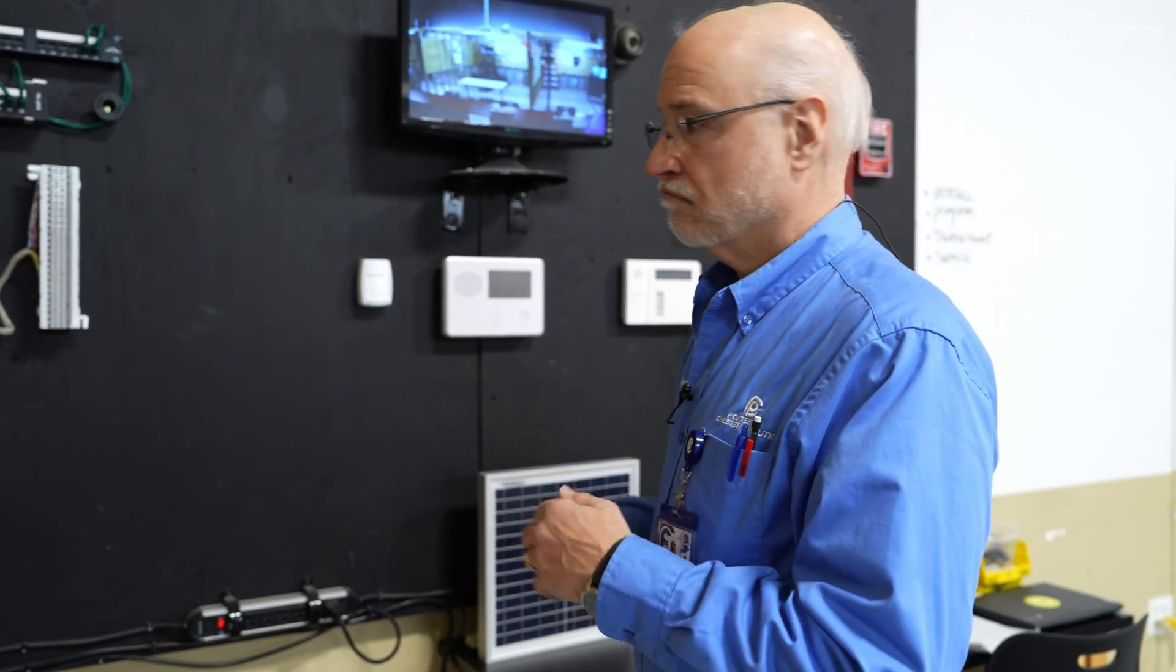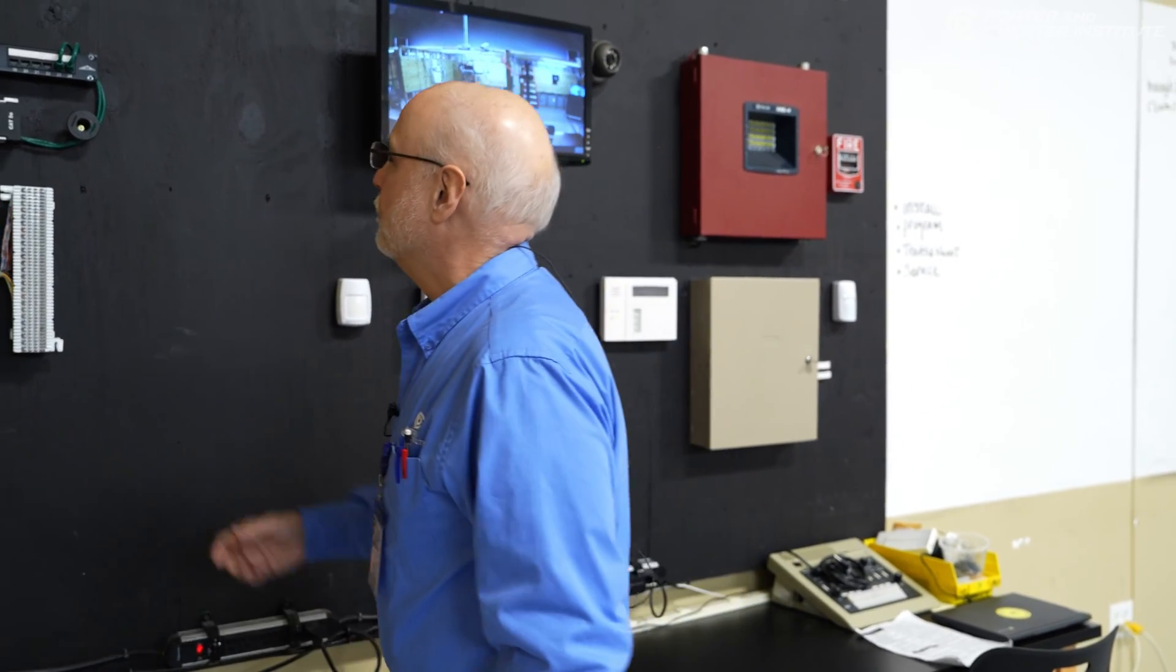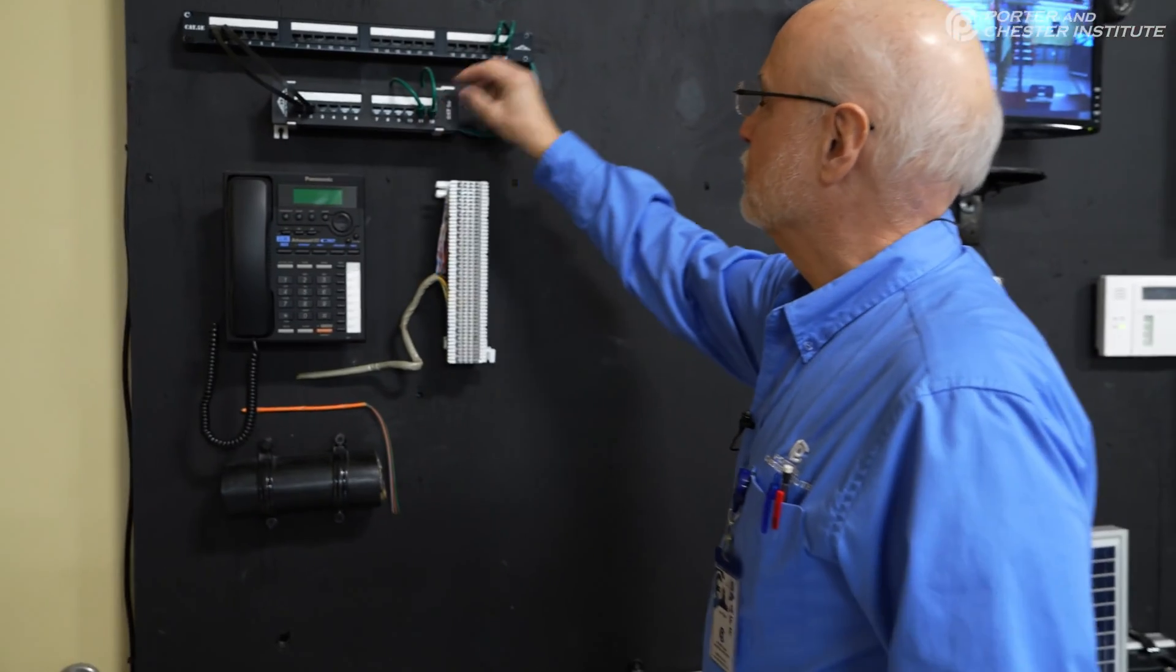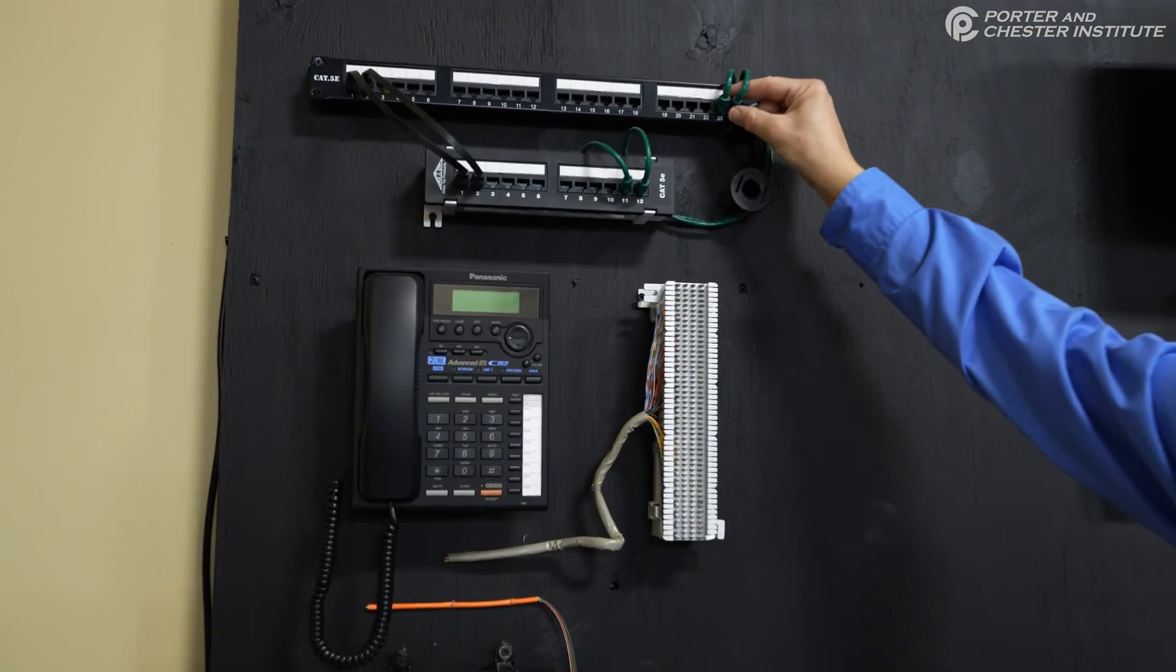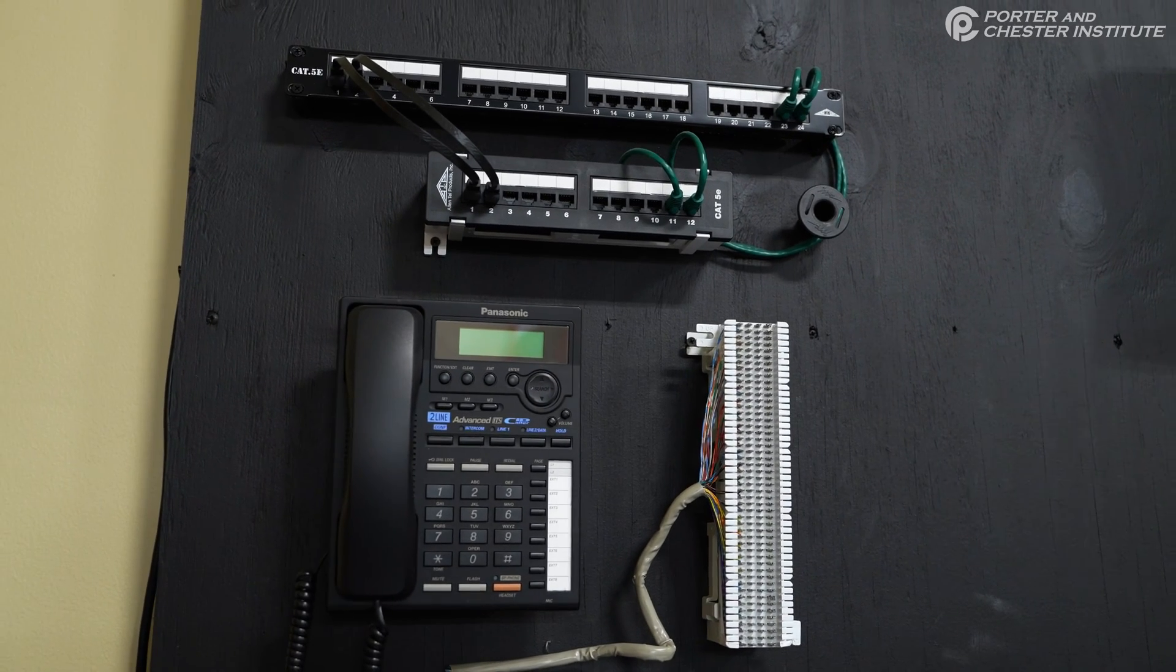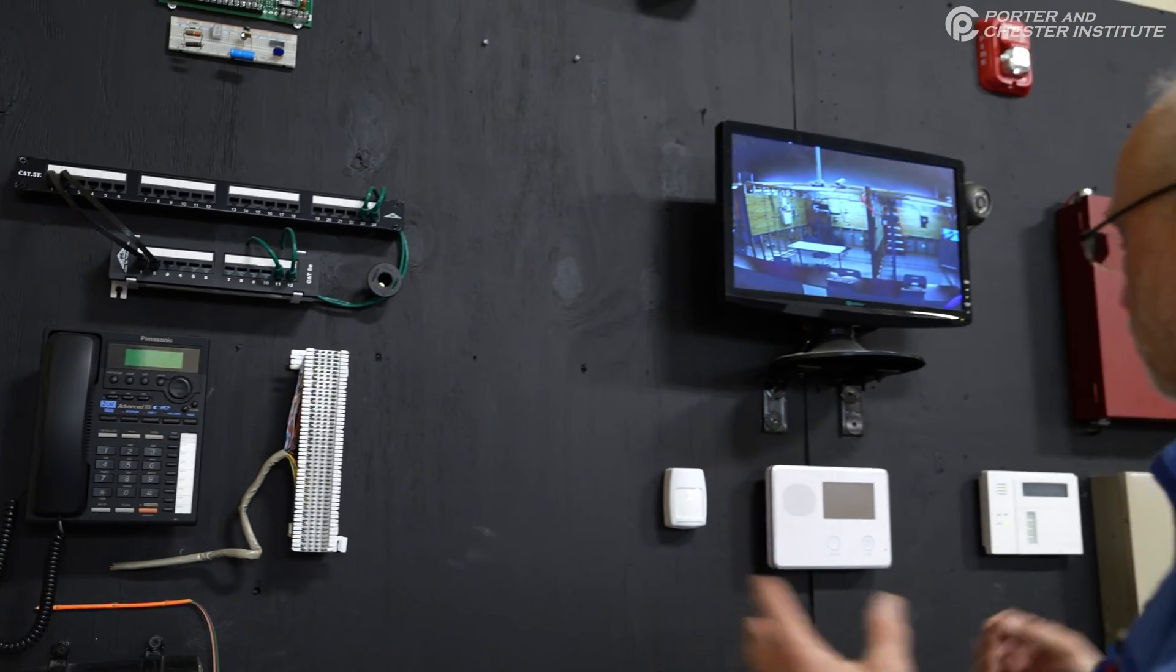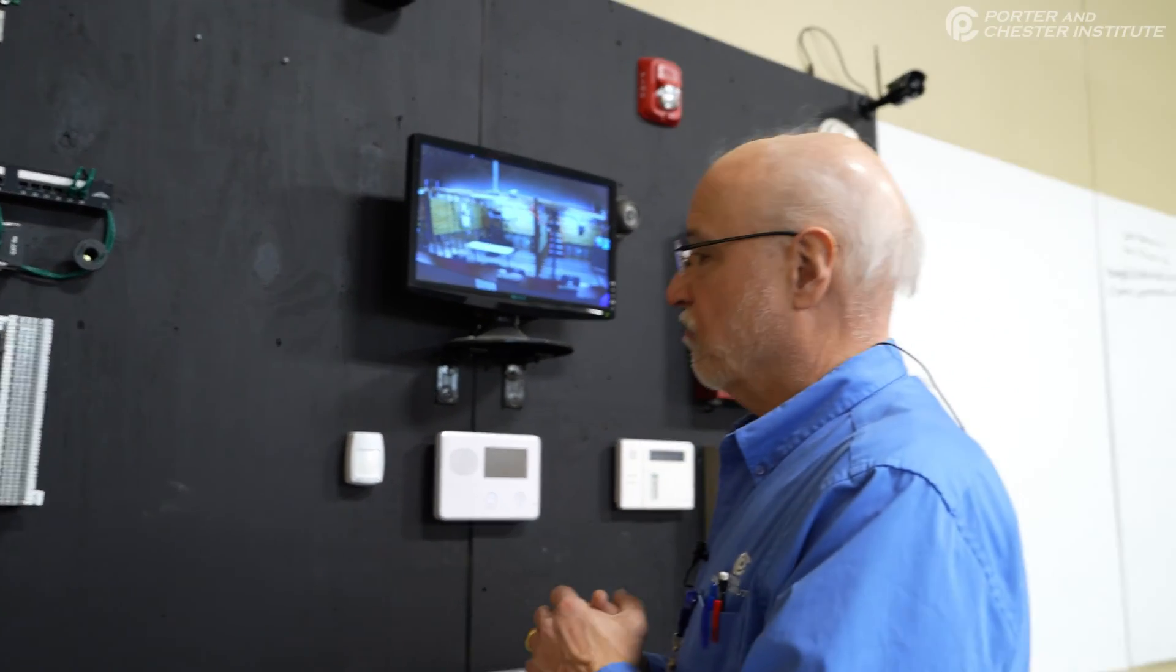Above and beyond that, probably certainly in the library, every cubbyhole, every office would have a data point. And that means a low voltage technician would have installed and dropped a wire at each of the locations where there's going to be a computer, a printer, a fax machine. So these are the items that typically fall into the category of low voltage.